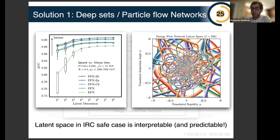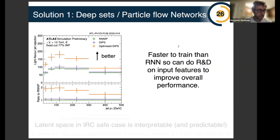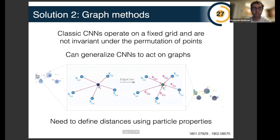Deep Sets also has advantages over RNNs in that it's faster to train, which can reduce the R&D cycle and therefore increase performance. Here's a picture showing the performance for flavor tagging: the purple and green are basically the same — an RNN versus a Deep Sets approach — but because Deep Sets is so much faster, they were able to optimize it further and therefore increase the performance quite a bit.